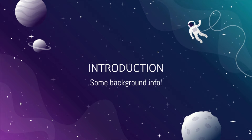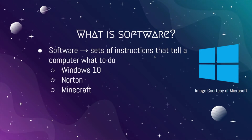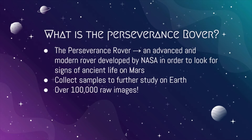Before we get started, we want to give you some background information. What is software? Software can be defined as sets of instructions that tell a computer what to do. What's the Perseverance Rover? It's an advanced and modern rover developed by NASA in order to look for signs of ancient life on Mars. Ever since it landed, the rover has taken over 100,000 raw images, and in order to complete its tasks, it has heavily relied on software.